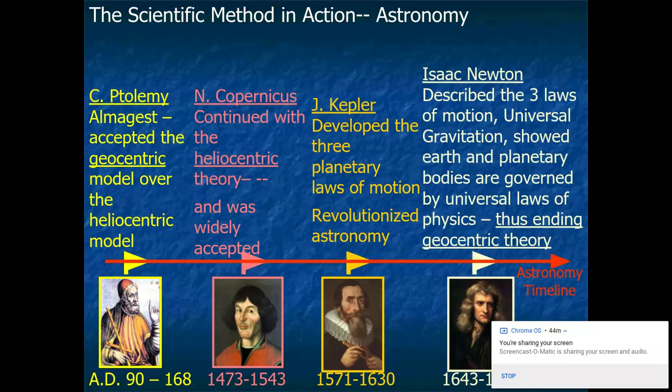If you look at the timeline of knowledge being gained with respect to the evolution of understanding our solar system, you see that knowledge is gained quicker and quicker. This is very typical of the scientific method, because what the scientific method represents is folks using the knowledge of previous folks — standing on the shoulders of knowledge. As knowledge is gained from one person to the next, advances are quicker and quicker. So it's only about 100 years after Kepler that Newton brings gravity in, demonstrating that under the scientific method and those logical steps, knowledge is typically gained faster and faster.